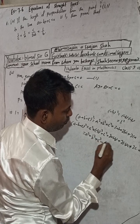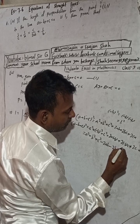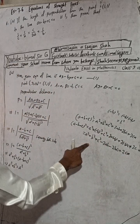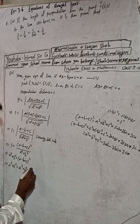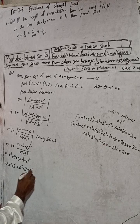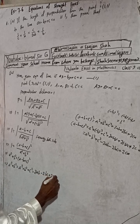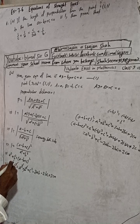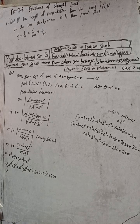So the right-hand side expands to a² plus b² plus c² minus 2ab minus 2bc plus 2ca. Now a² plus b² appears on both sides, so they cancel. We are left with: 0 equals c² minus 2ab minus 2bc plus 2ca.